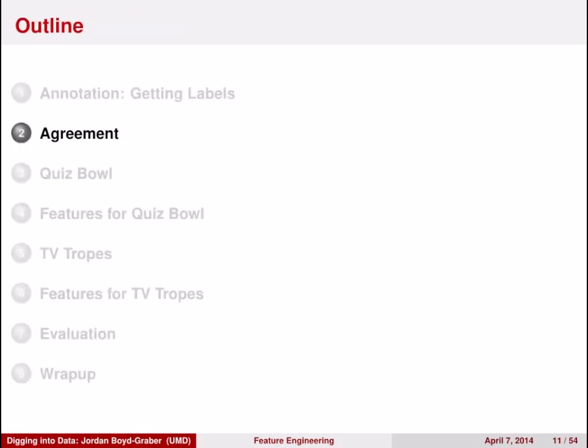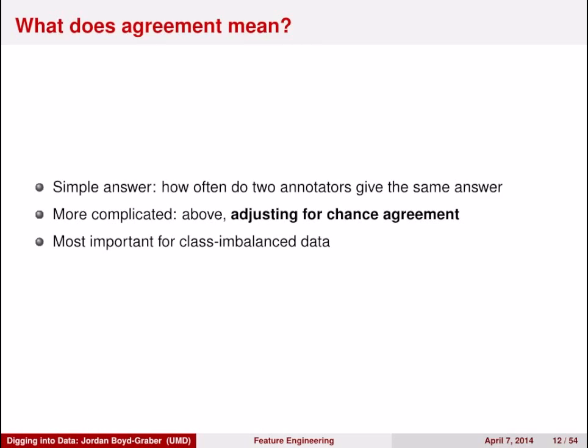So first, what does agreement mean? The simple answer is: agreement is how often annotators give the same answer given the same question. But to be rigorous, you also need to adjust for the possibility that your annotators agreed by chance. This is particularly important for class-imbalanced data.